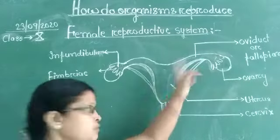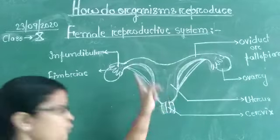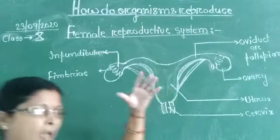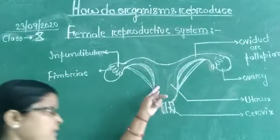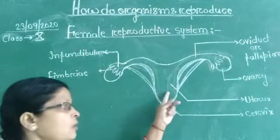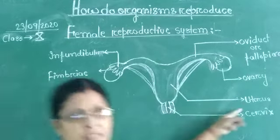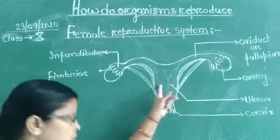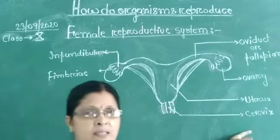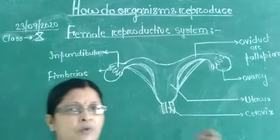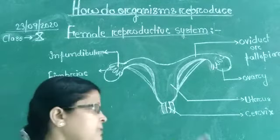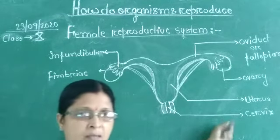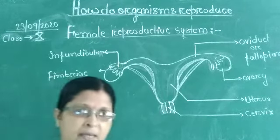The oviduct on each side joins the uterus. This tube-type structure at the center is called the uterus. The uterus opens into a canal, and that canal is called the cervix. The cervix is also known as the birth canal, and the cervix opens externally into the vagina.